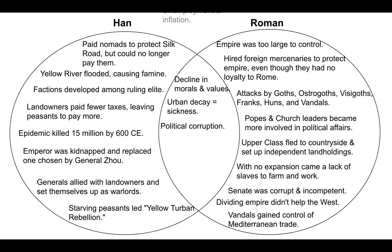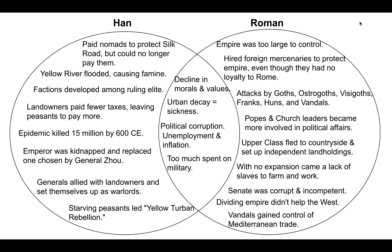In both governments, there was a lot of political corruption that we've talked about. There will be unemployment in the cities in both the Han Dynasty capital and the western part of the Roman Empire. Very high inflation as well, which means prices become too high and people can't afford to buy necessities.